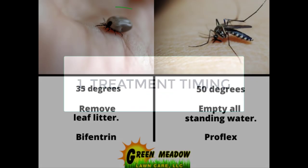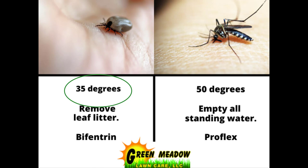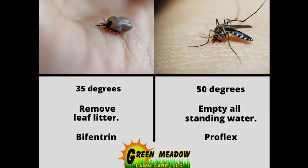Ticks: if snow cover is low, ticks will pop their heads out when temperatures hit 35 degrees, but they won't be fully active till ground temperatures reach about 45 degrees. Mosquitoes tend to start coming out when temperatures have reached 50 degrees Fahrenheit.